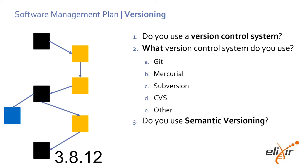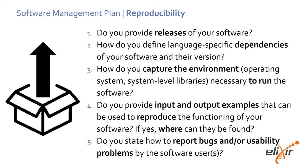Regarding versioning, we ask whether semantic versioning and version control systems are used, and which ones. Reproducibility is the aspect with more questions. Here we are interested in releases, capturing dependencies as well as the running environment, inclusion of input and output examples that can be used to reproduce the functionality, and reporting of bugs or usability issues.